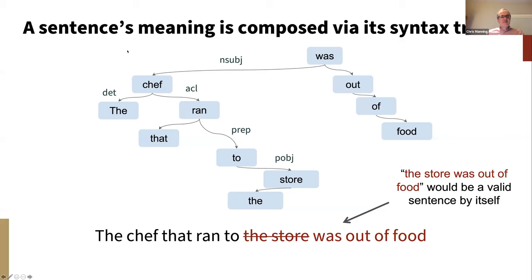This tree structure is completely key to understanding sentences. If you have a sentence like 'the chef that ran to the store was out of food,' it's not the store that's out of food, even though 'the store' is nearby. Rather, as the tree structure shows, it's the chef that is the subject of 'was out of food,' and 'ran to the store' is a relative clause modifying 'chef.'